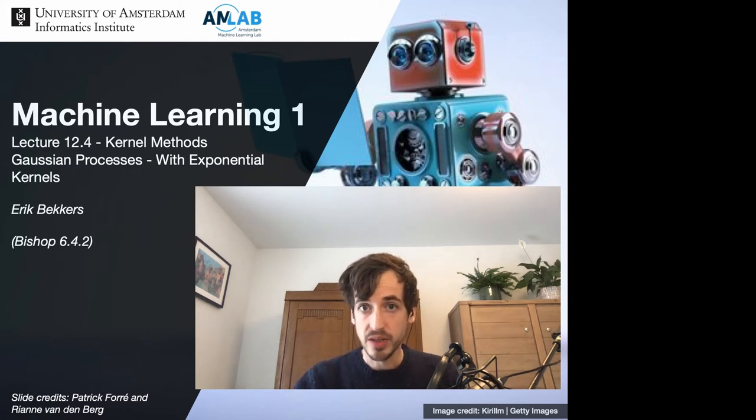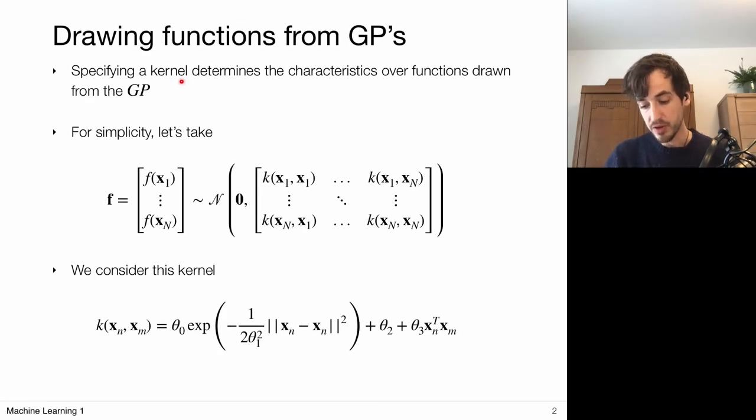Now that we have defined Gaussian processes, let's have a closer look at what kind of functions can be generated when I make a specific choice for the kernel. We're going to focus on the kernel because it will eventually fully determine the characteristics of the functions that are drawn from my Gaussian process.